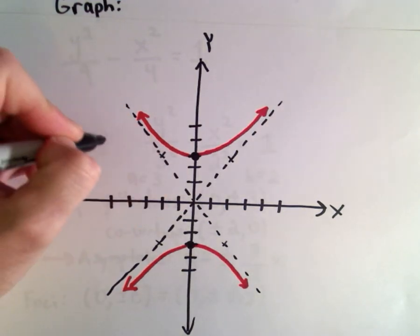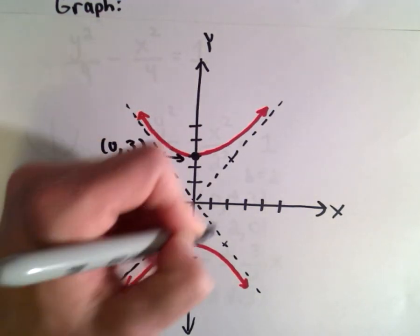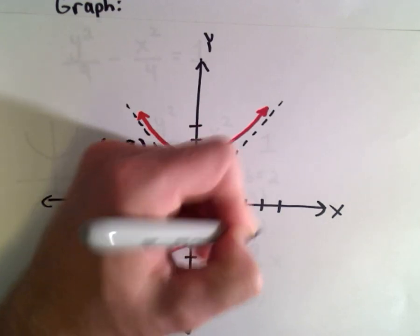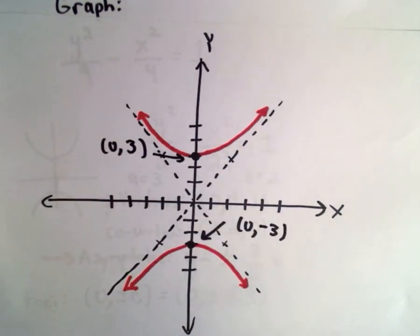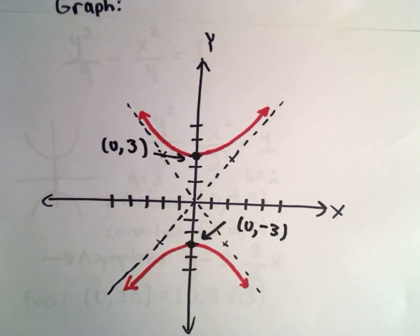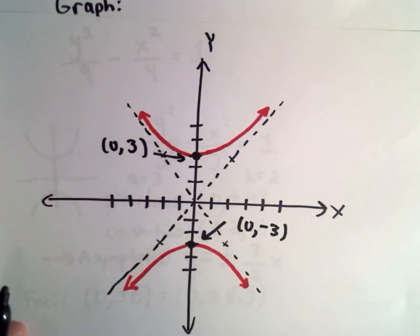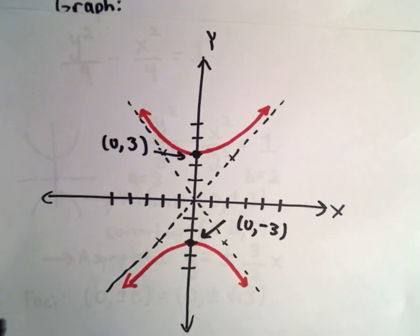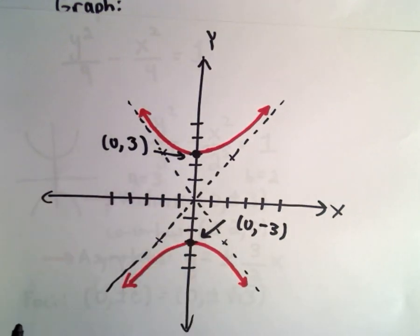It never hurts to label a couple of points: (0, 3) and (0, -3). You don't want it to be super cluttered, but if you wanted to, you could even label the foci and the co-vertices. I'm going to leave them off my graph so it doesn't look like a total mess.